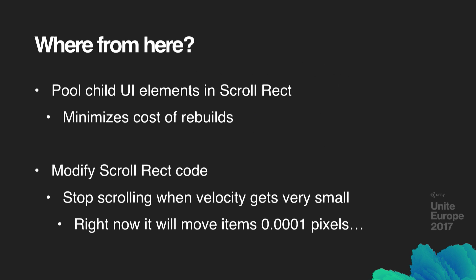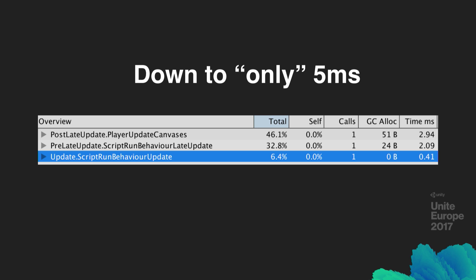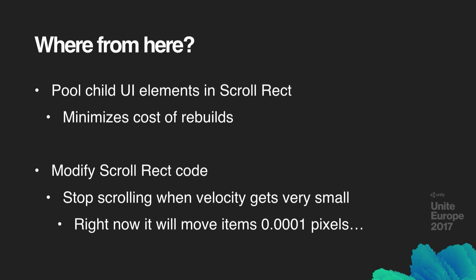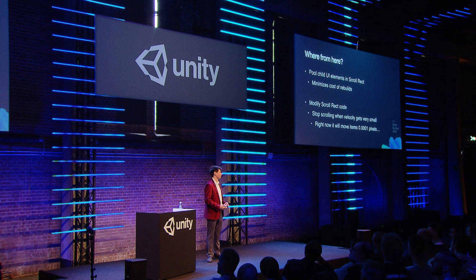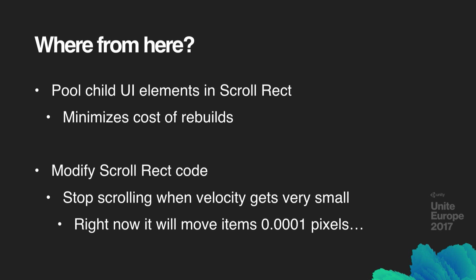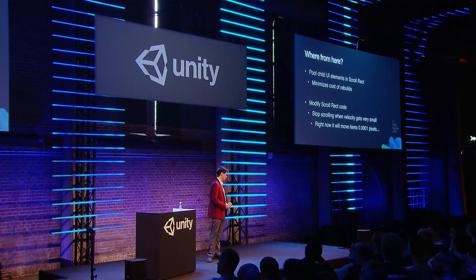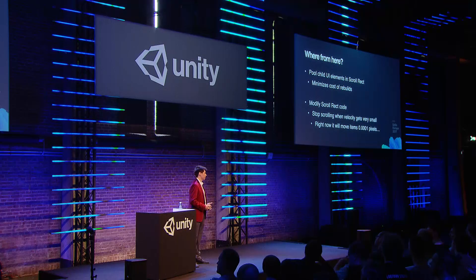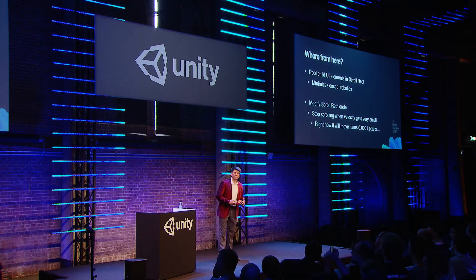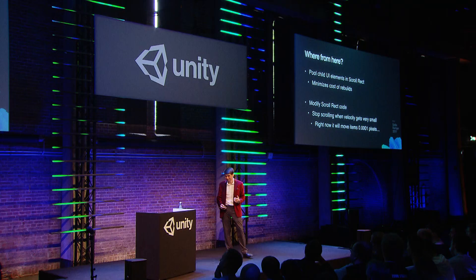I would still not consider five milliseconds acceptable. We'd have to keep optimizing the scroll rect further. The first and most direct way would be to pool the elements in the scroll rect — disable the ones that aren't visible, either adding new elements at the bottom and removing them at the top, or enabling and disabling them as they enter or leave view. This will require custom code. You may also want to add code to clamp the scroll rect's velocity, because Unity's scroll rect code does not aggressively clamp velocity. If you have inertia turned on and flick the scroll rect, for several frames — often two or three seconds after it has apparently finished scrolling — it is still moving by about a hundredth or thousandth of a pixel every frame, still marking your canvas as dirty and taking up that five milliseconds.